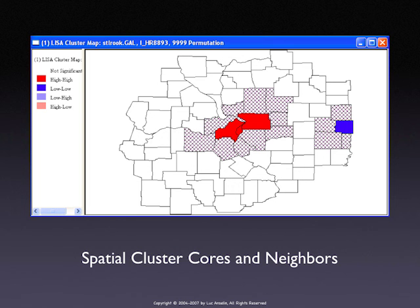Did GeoDa produce this map — how did you get the crosshatch? We did the selection in GeoDa, changed the crosshatching to a dark crosshatching by just clicking on these things — that gives it to you. I wish we had that built in, but not yet.